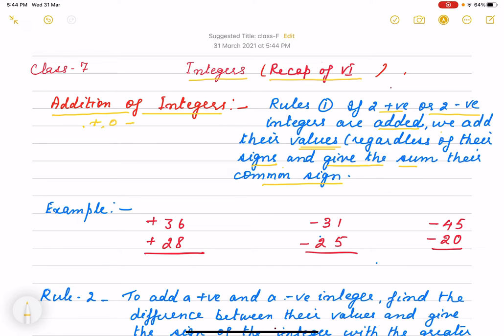You have +36 and +28, two integers I've taken. So 6 plus 8 is 14, carry 1. 3 plus 2 is 5, plus 1 carry is 6. And what is the sign? Plus. So +64 is the answer.